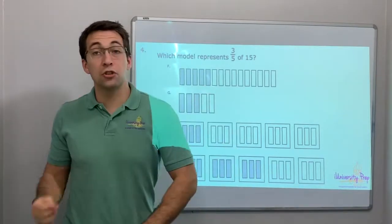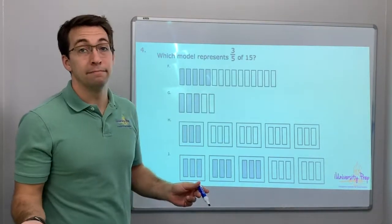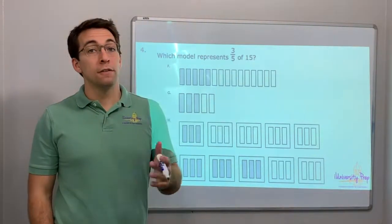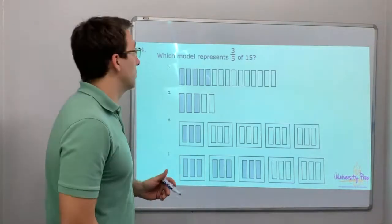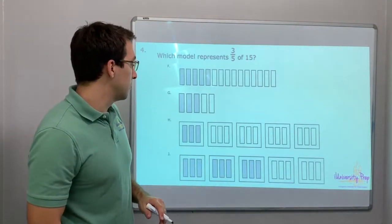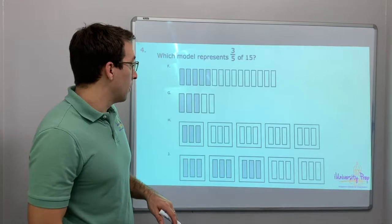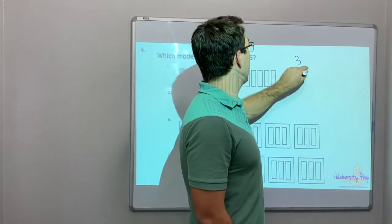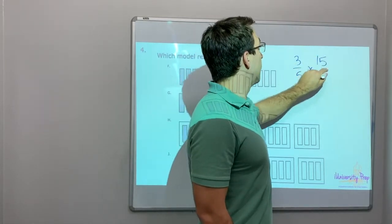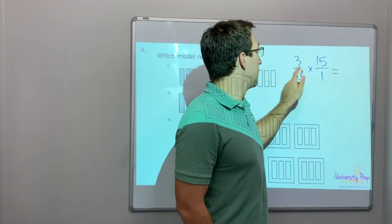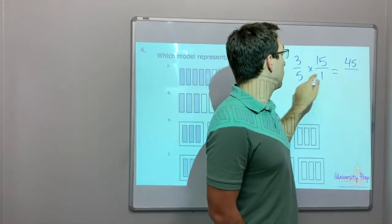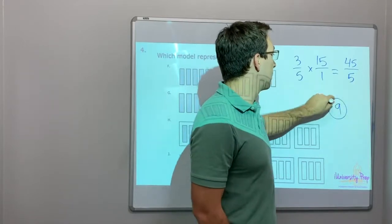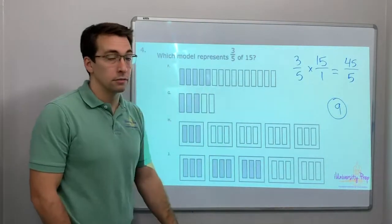Which model represents three-fifths of fifteen? Three-fifths out of fifteen. So, what are we going to do here? Three-fifths times fifteen over one. Forty-five over five. 45 divided by five is nine. Nine's our answer. Watch this.